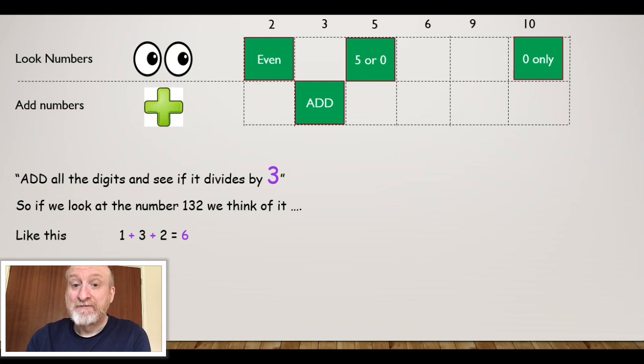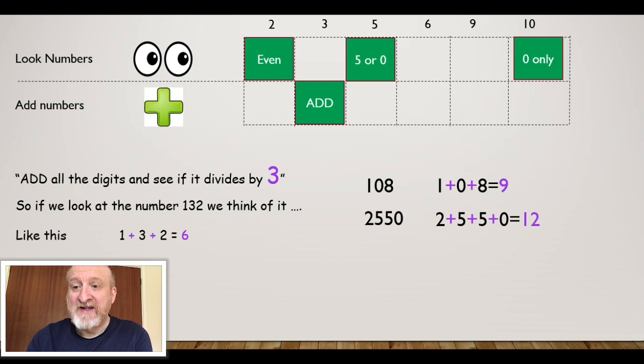If I add those up I get the number 6. The 6 is in the 3 times table, it's divisible by 3. That means 3 goes exactly into 132. How about 108? Well, I think of it as 1 + 0 + 8, that equals 9.